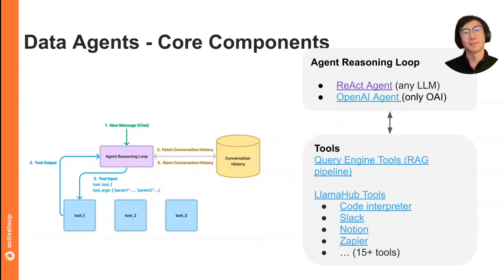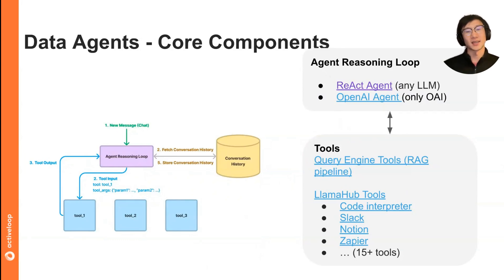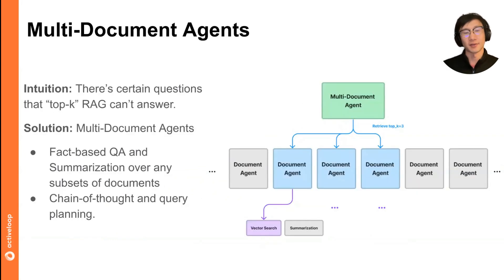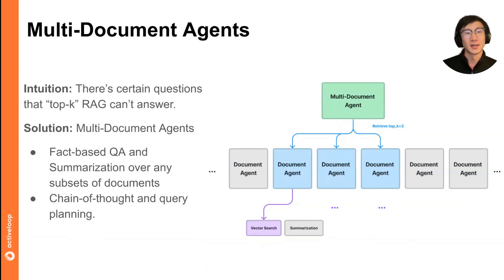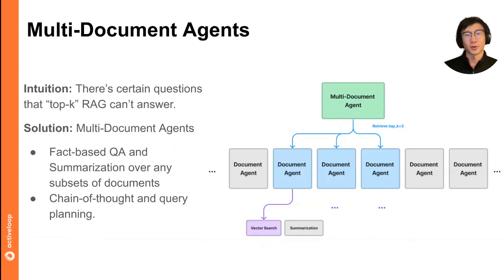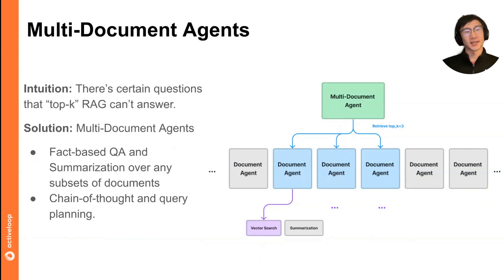The third component is some sort of basic conversation memory to store state and the set of interactions. At a very basic level you can just dump it all in the context window, and especially as context windows get bigger, that very simple approach is actually not bad.